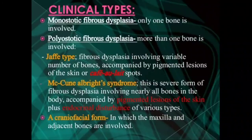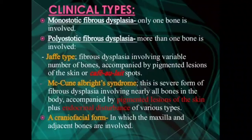The clinical types of fibrous dysplasia are monostotic and polyostotic. In the polyostotic type we have the Jaffe type as well as McCune-Albright syndrome, and then the craniofacial form. Monostotic means only one bone is affected, whereas polyostotic means many bones are affected. The Jaffe type is accompanied by café au lait spots, and McCune-Albright syndrome is a severe form accompanied by skin pigmentation as well as endocrinal disturbances. The craniofacial form involves the maxilla and adjacent bones.